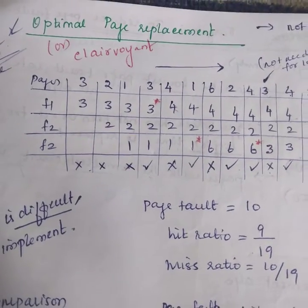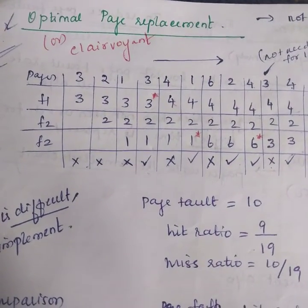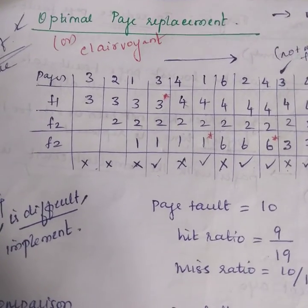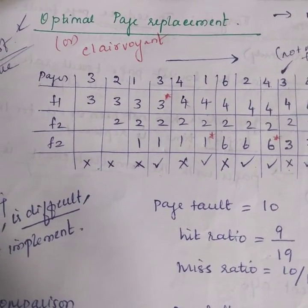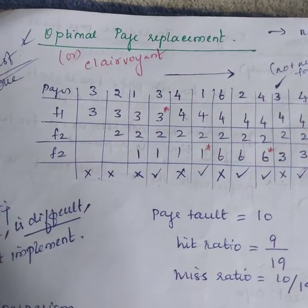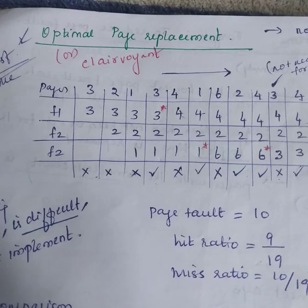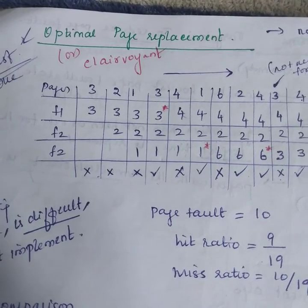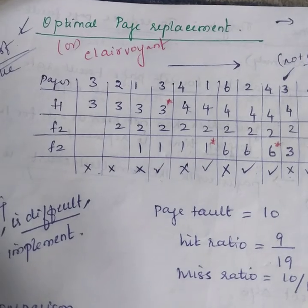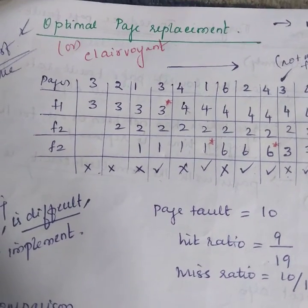Hello students, here we will be seeing optimal page replacement algorithm. In memory management, when a new page is referred and not present in memory, page fault occurs. So OS replaces one of the existing pages with a newly needed page. The target of page replacement algorithm is to reduce the number of page faults.